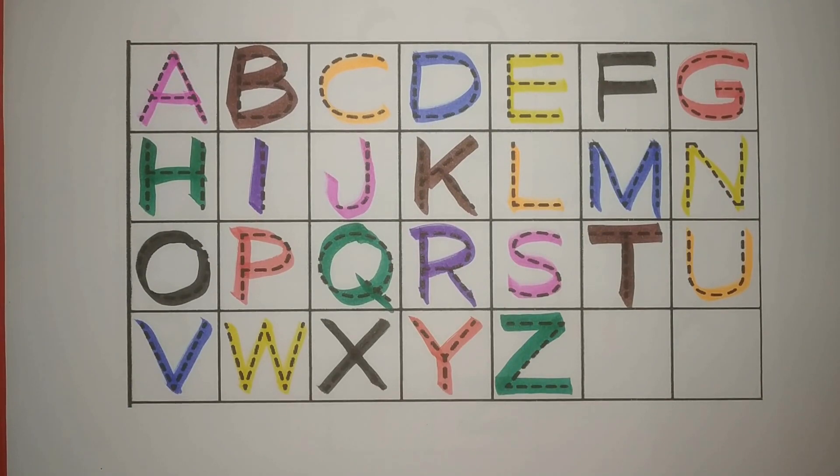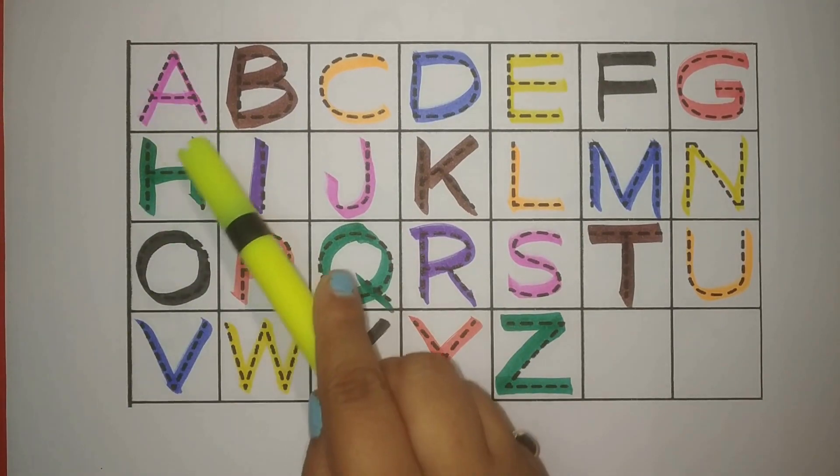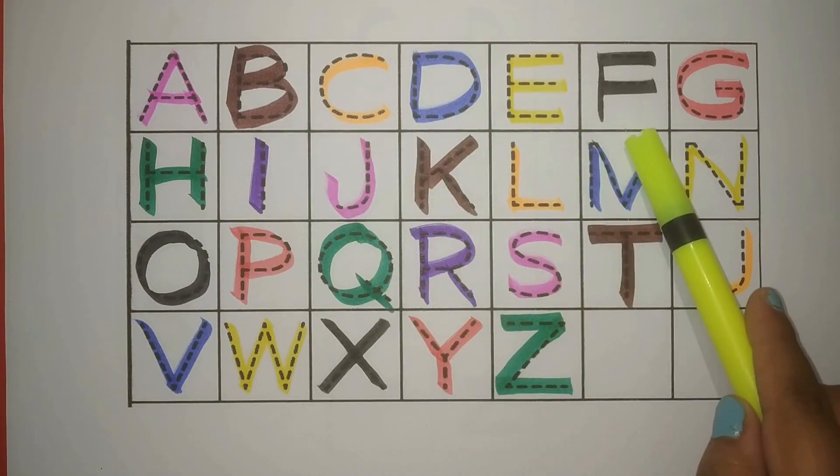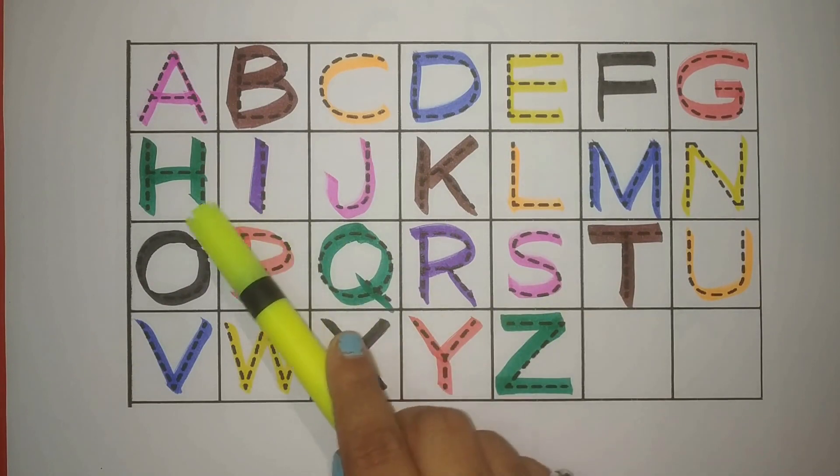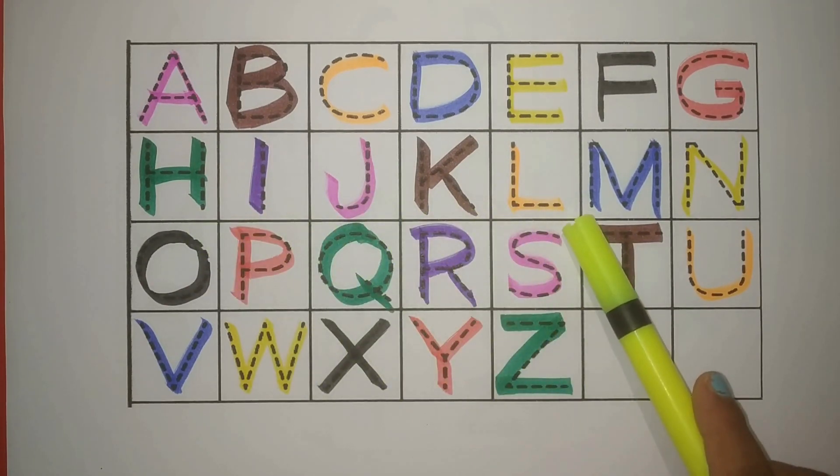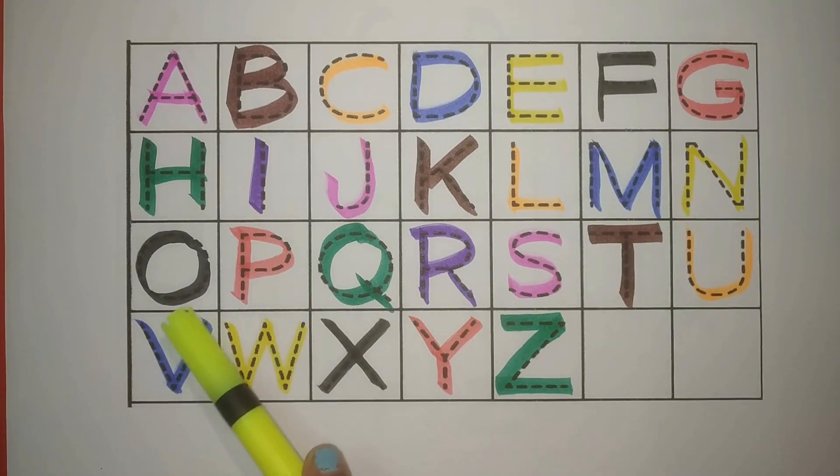Let's revise, चलो फिर से करते हैं. A pink, B brown, C orange, D blue, E yellow, F black, G red, H green, I purple, J pink, K brown, L orange, M blue, N yellow, O black, P red, Q green, R purple, S pink, T brown, U orange, V blue, W yellow, X black, Y red, and Z green. Simple.